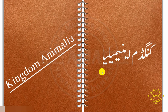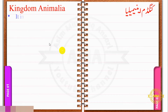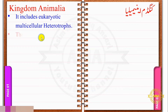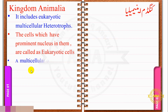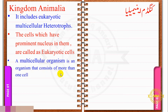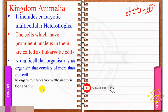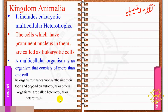Aaj ki ish video me haam kingdom Animalia ki properties ko discuss karayenge. Dear, it includes eukaryotic multicellular heterotrophs. The cells which have a prominent nucleus in them are called eukaryotic cells, and a multicellular organism is an organism that consists of more than one cell. The organisms that cannot synthesize their own food and depend on other organisms are called heterotrophs or heterotrophic organisms.